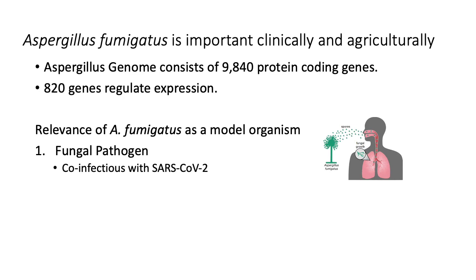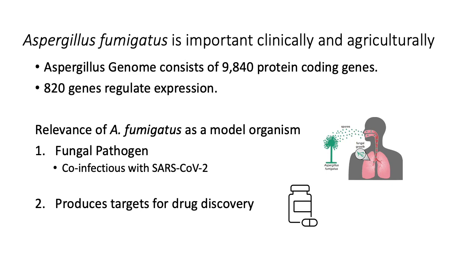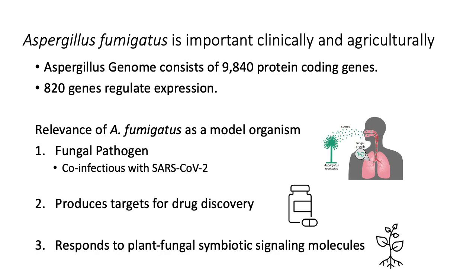In addition to Aspergillus' role as a fungal pathogen, it also produces many secondary metabolites. Secondary metabolites are a class of molecules related to chemical defense. As such, many of these metabolites play an important role in the disease state of Aspergillus fumigatus or could be used as targets for future drug discovery trials. Finally, Aspergillus responds and produces chemical signaling molecules called lipochitooligosaccharides, or LCOs. LCOs are a prominent signaling molecule in the plant-fungal symbiosis mechanism. Specifically, in legumes, LCOs result in the recruitment of fungi and the formation of root nodules. Root nodules are the site of nitrogen fixation and play an important role in agricultural processes.